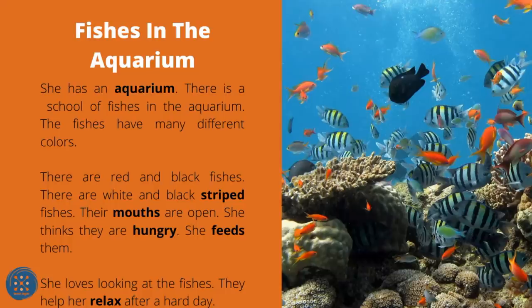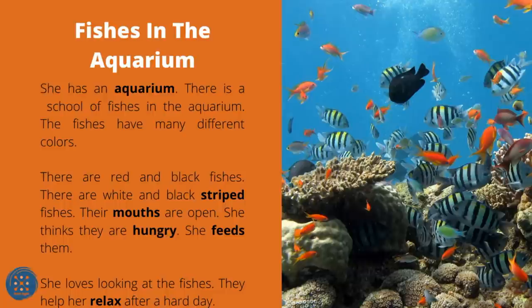Fishes in the Aquarium. She has an aquarium. There is a school of fishes in it — the fishes have many different colors. There are red and black fishes, and white and black striped fishes. Their mouths are open. She thinks they are hungry and feeds them. She loves looking at the fishes. They help her relax after a hard day.